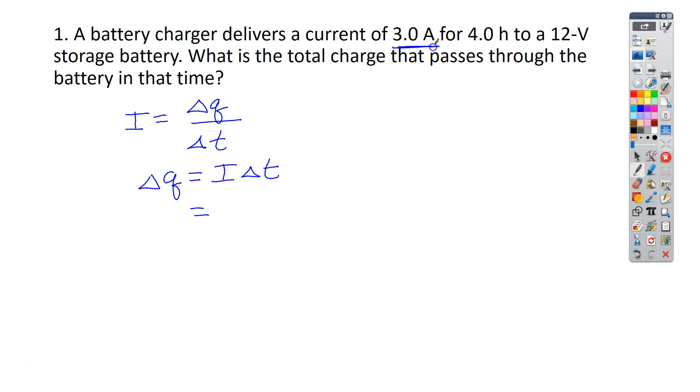The current that they gave us is 3 amps, so we'll put that 3 amps in here. And then the time that we have is 4 hours, but we need to convert that 4 hours into seconds, because we remember amps are equal to a coulomb per second. We know in one hour there are 3,600 seconds. And if you do your math, you should end up with 4.3 times 10 to the 4th coulombs, and that is your final answer.